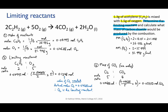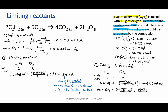The final task is to convert this into a mass. I need the molar mass of CO2 — pulling out the periodic table, that's 44.01 grams per mole. I multiply the moles of CO2 by the molar mass to get 1.650 grams. Since my original masses were to 2 sig figs, I round that down to 1.7 grams.